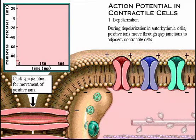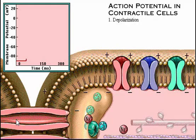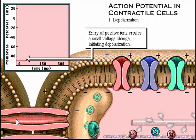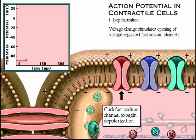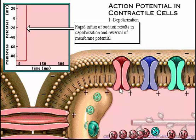During depolarization in adjacent auto-rhythmic cells or contractile cells, a few positive ions move through the gap junctions into neighboring contractile cells. Click the gap junction to see the movement of positive ions. This entry of positive ions creates a small voltage change, which initiates depolarization. This voltage change stimulates the opening of voltage-regulated fast sodium channels. Rapid influx of sodium results in depolarization and reversal of the membrane potential from negative inside the cell to positive. Recall that for the auto-rhythmic cell, it's the rapid influx of calcium and not sodium that causes depolarization.